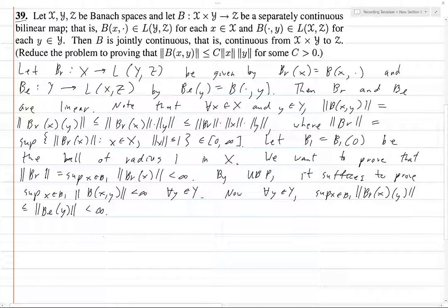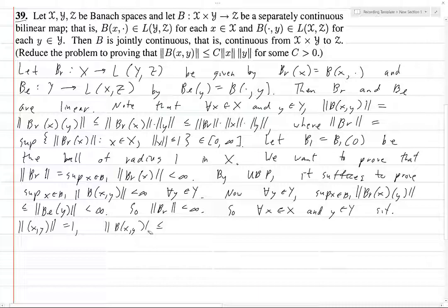So for all x ∈ X and y ∈ Y such that the norm of the pair (x,y) in the product is equal to one, we have ||B(x,y)|| is less than or equal to ||B_r|| · ||x|| · ||y||, which is just less than, because if this product thing is one, this is just the max, and so these all have norm at most one, so this is less than or equal to ||B_r||. So hence B is continuous.